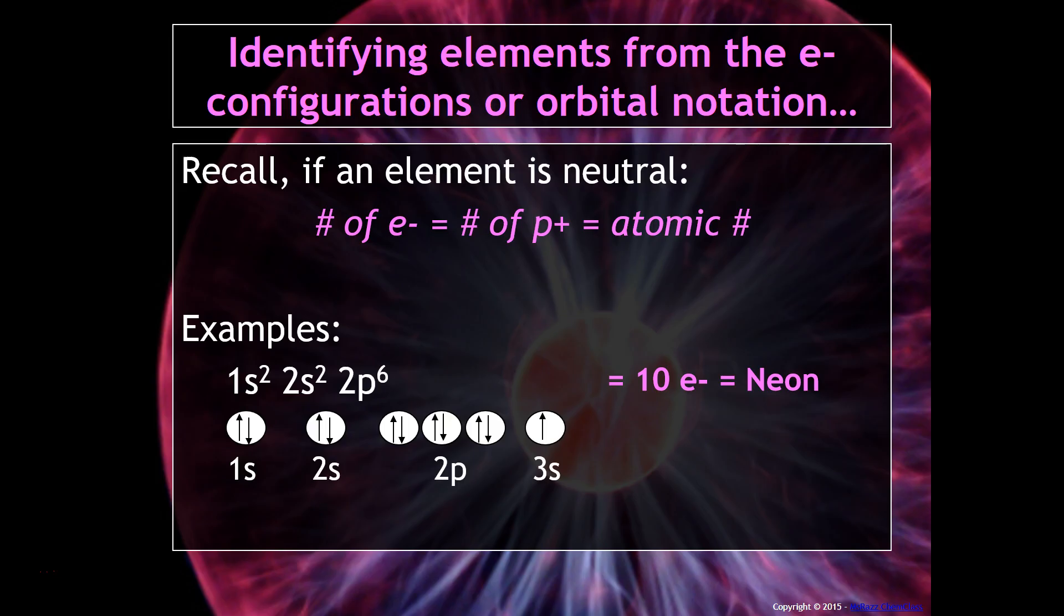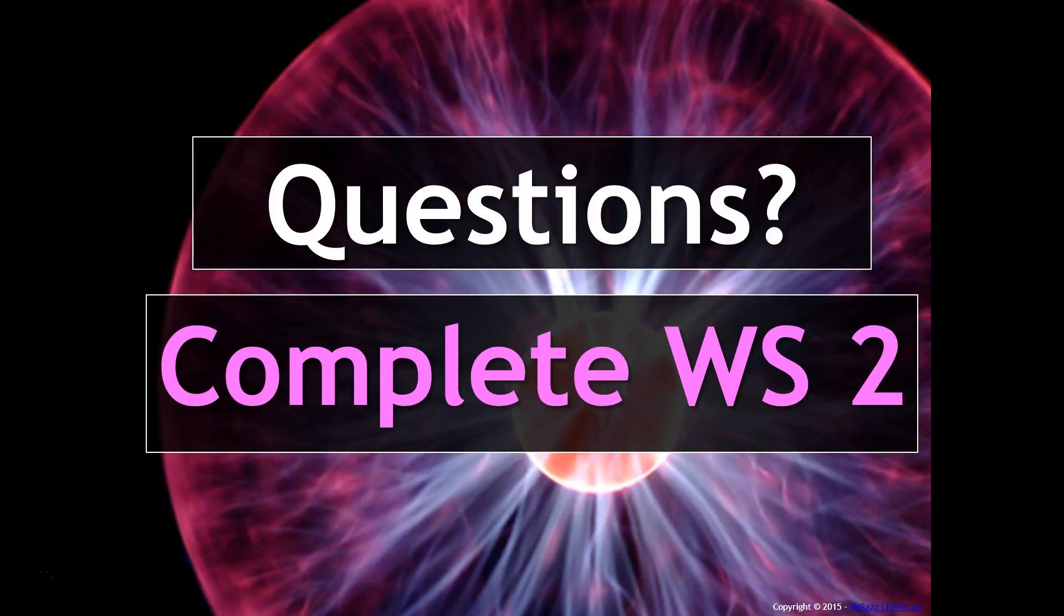Here's another orbital notation. It looks like we have a total of 2, 4, 6, 8, 10, 11 electrons. So if we look on the periodic table, that will correspond to sodium.